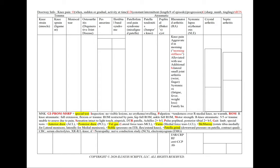In rheumatoid arthritis, we'll see knee pain that is aggravated in the morning — high-yield morning stiffness — and alleviated with use. We'll also note additional bilateral small joint arthritis in the wrist or fingers, positive systemic symptoms including fatigue, fever, or weight loss, and a positive family history. We'll order an ESR/CRP, a rheumatoid factor, and anti-CCP antibodies.